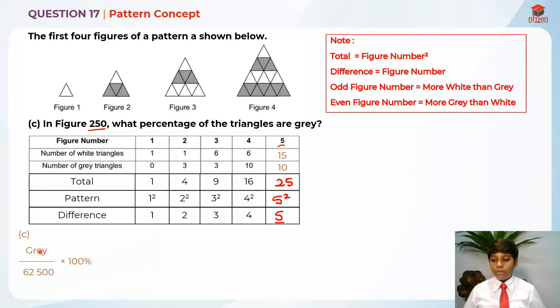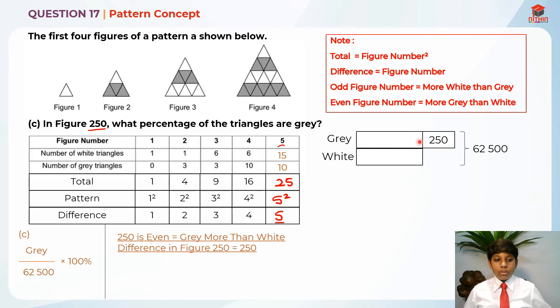So for part C, we need to find gray over 62,500 times 100%, right? So this is how we find the percentage of gray triangles. But we need to find the gray first. And we know that 250 is even, so gray is more than white. And we know the difference in the figure 250, which is 250. So the gray is 250 more than the white. Let me draw a quick model. So this is the model. Gray is 250 more than the white. So that is why the total is 62,500, right?